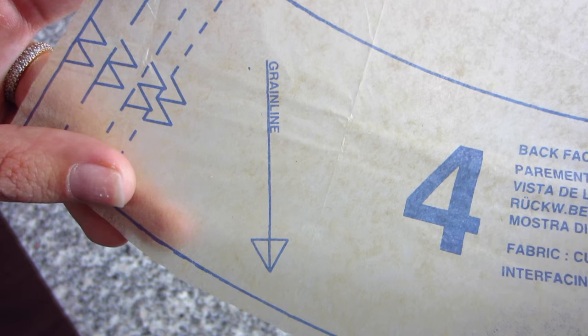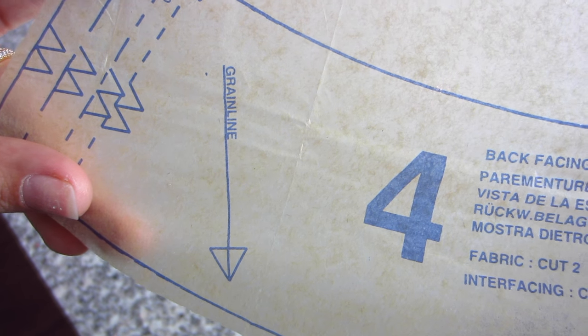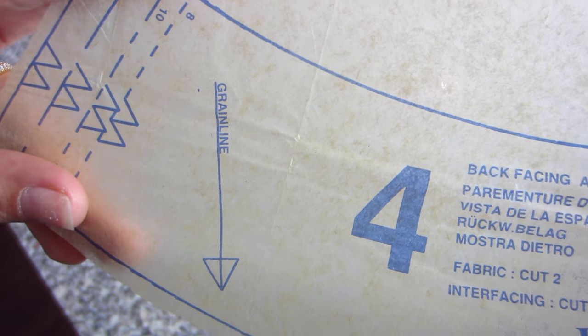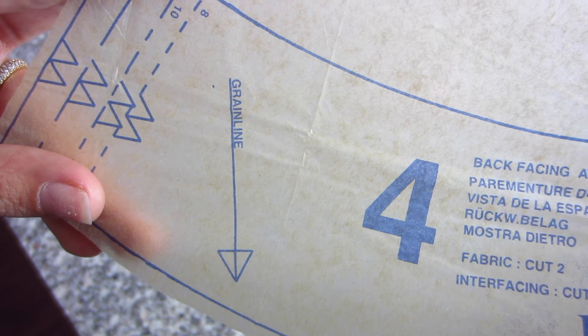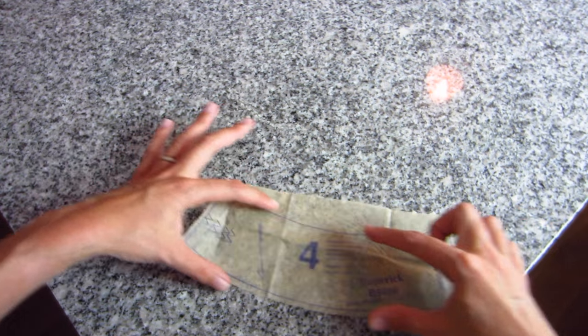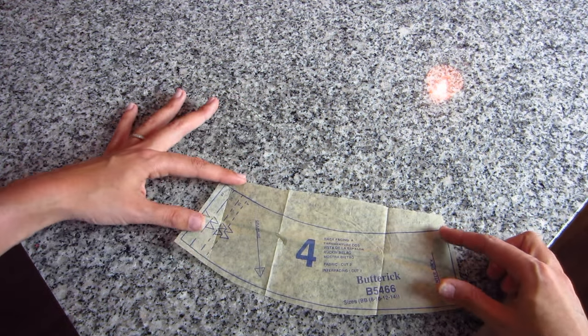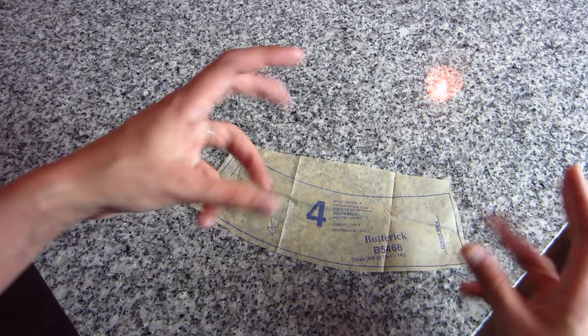Also on here is something called a grainline. It'll probably be easier for us to discuss grainline next week when we have some fabric out. But grainline really is the part of your fabric that runs parallel to the selvedge, and so this just tells you that, you know, this pattern piece kind of looks like a little curved box here, and you don't just want to throw it on your fabric and cut it out.